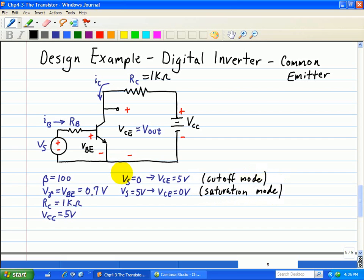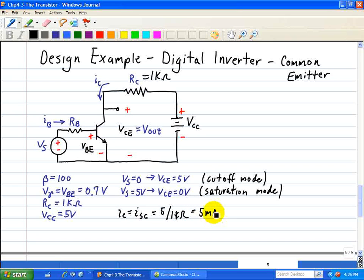So in this case, IC is like the short circuit collector which will establish our lower bound. It's equal to 5 divided by 1 kilo ohm due to RC. Because this value is here, 5 is Vcc and RC is 1 kilo ohm, that gives us a short circuit current of 5 milliamps.